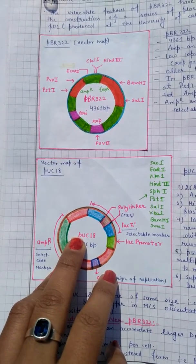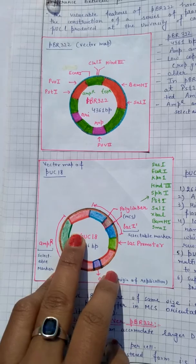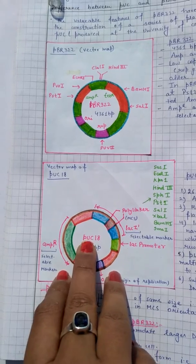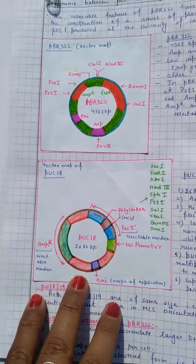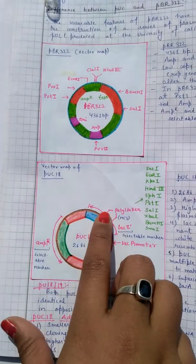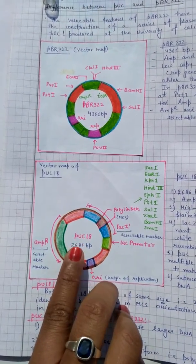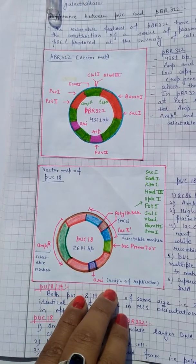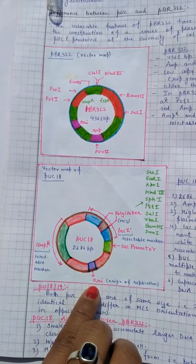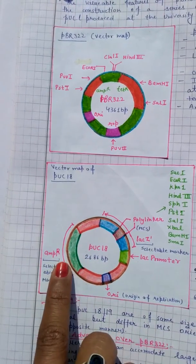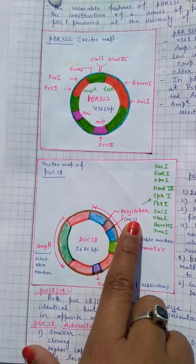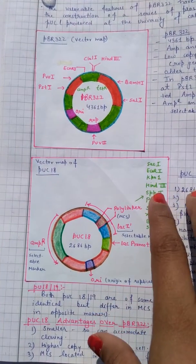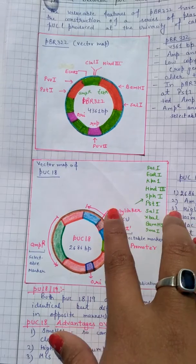There is another form of pBR322 which is pUC18. 'pUC' stands for Plasmid of University of California, and 18 is the order number of discovery. These three components are also present in pUC18. The size of pUC18 is approximately 2.6 kb or 2686 base pairs. It should have an ORI origin of replication, and it also has multiple cloning sites, but all these sites are clustered in one particular area known as a polylinker.